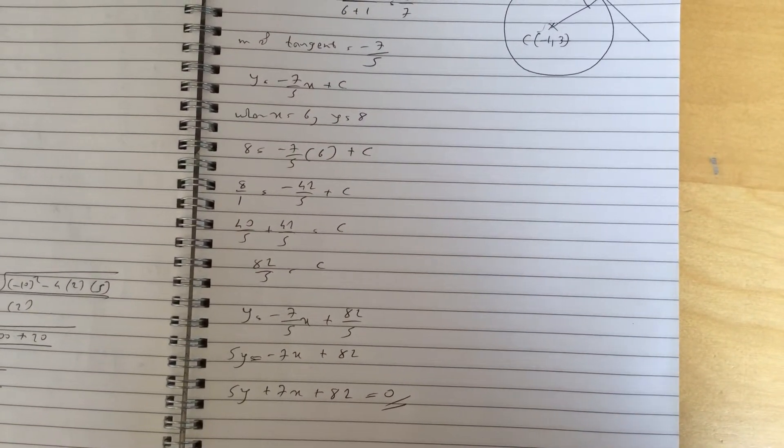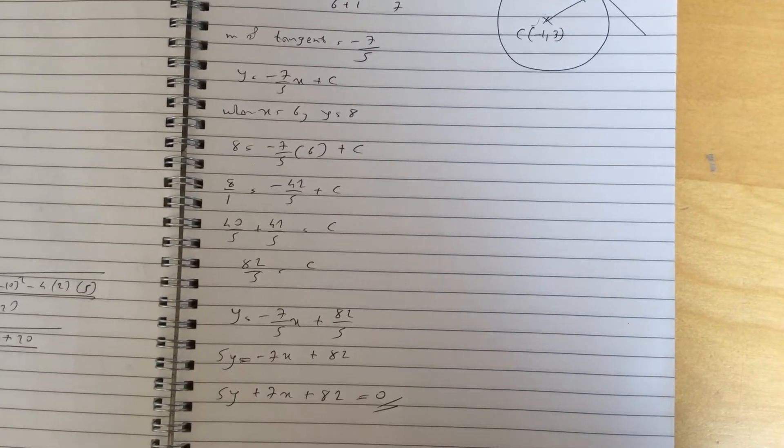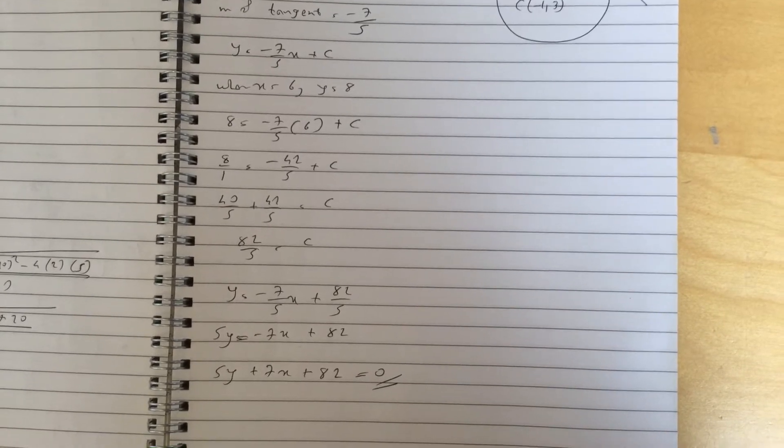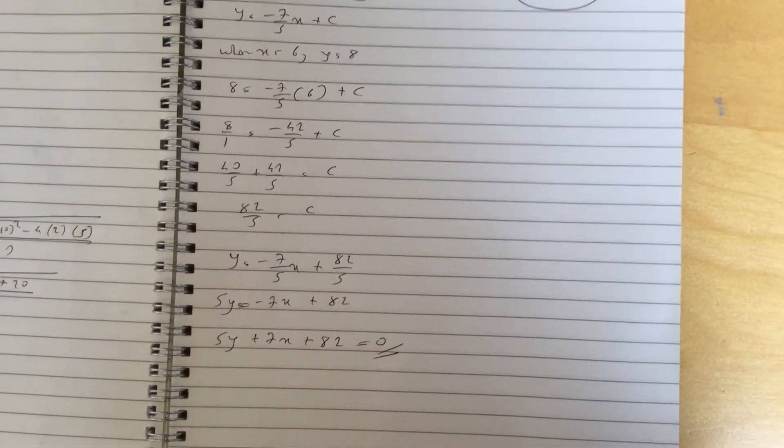So y equals minus 7x over 5 plus 82 over 5. If you just multiply everything by 5, you get 5y equals minus 7x plus 82, and then bring everything to the left. You get 5y plus 7x minus 82 equals 0.